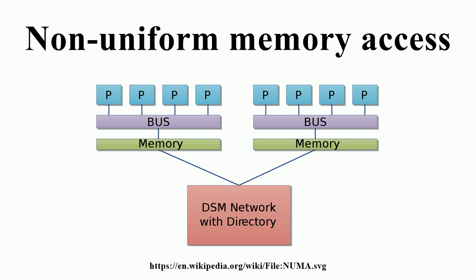Software Support: Since NUMA largely influences memory access performance, certain software optimizations are needed to allow scheduling threads and processes close to their in-memory data. Microsoft Windows 7 and Windows Server 2008 R2 add support for NUMA architecture over 64 logical cores. Java 7 added support for a NUMA-aware memory allocator in its Garbage Collector. Version 2.5 of the Linux kernel already contained basic NUMA support, which was further improved in subsequent kernel releases.